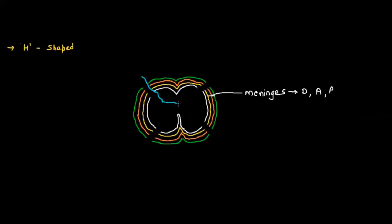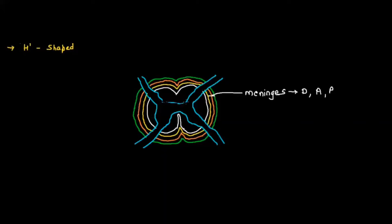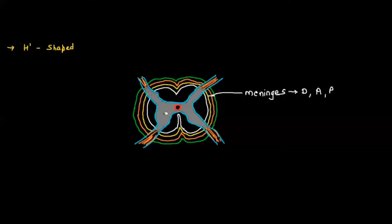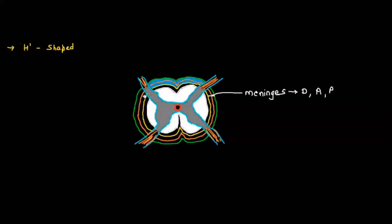The H-shaped structure is the cross section of the spinal cord. When you look at it, it appears H-shaped with two types of matter: gray matter and white matter. In the brain, the outer layer is gray matter and the inner is white matter, but in the spinal cord it is reversed — the outer matter is white matter and the inner matter is gray matter.